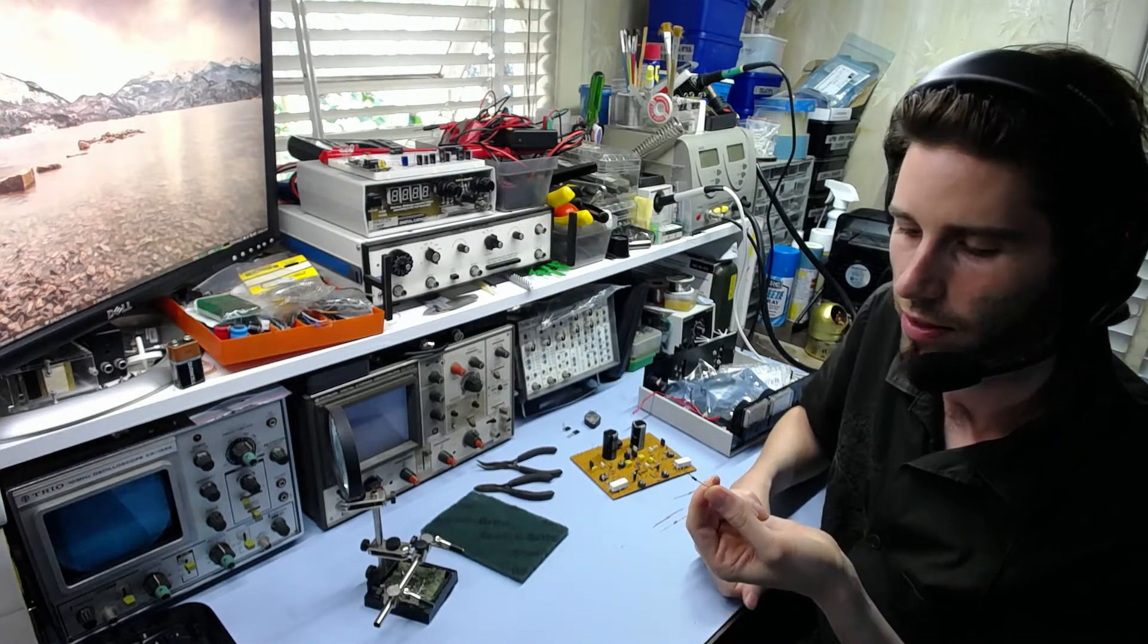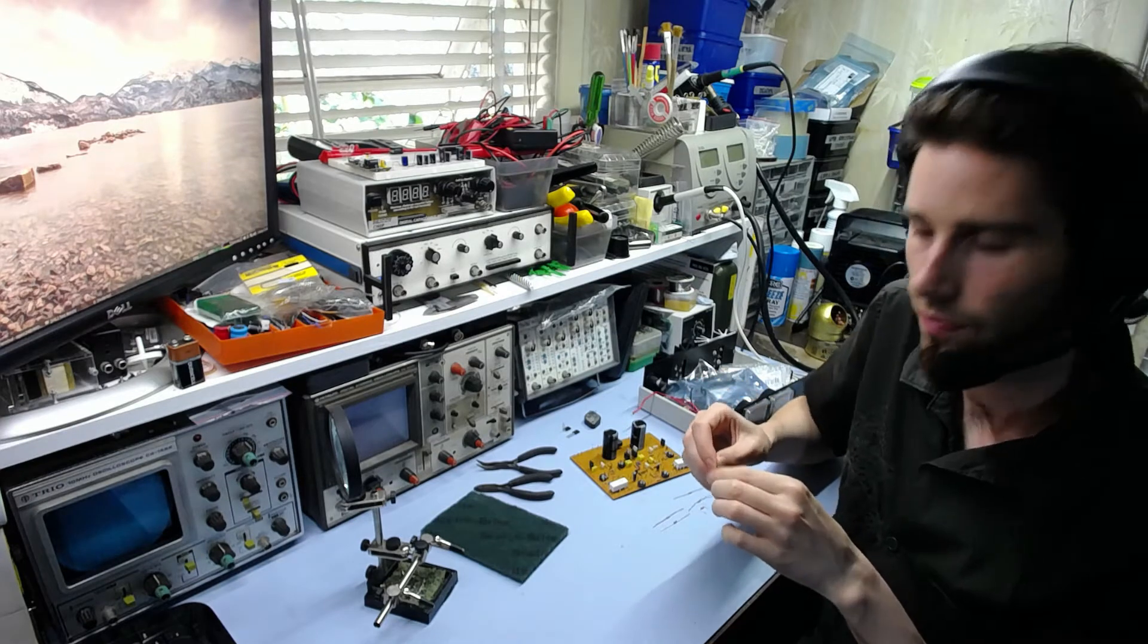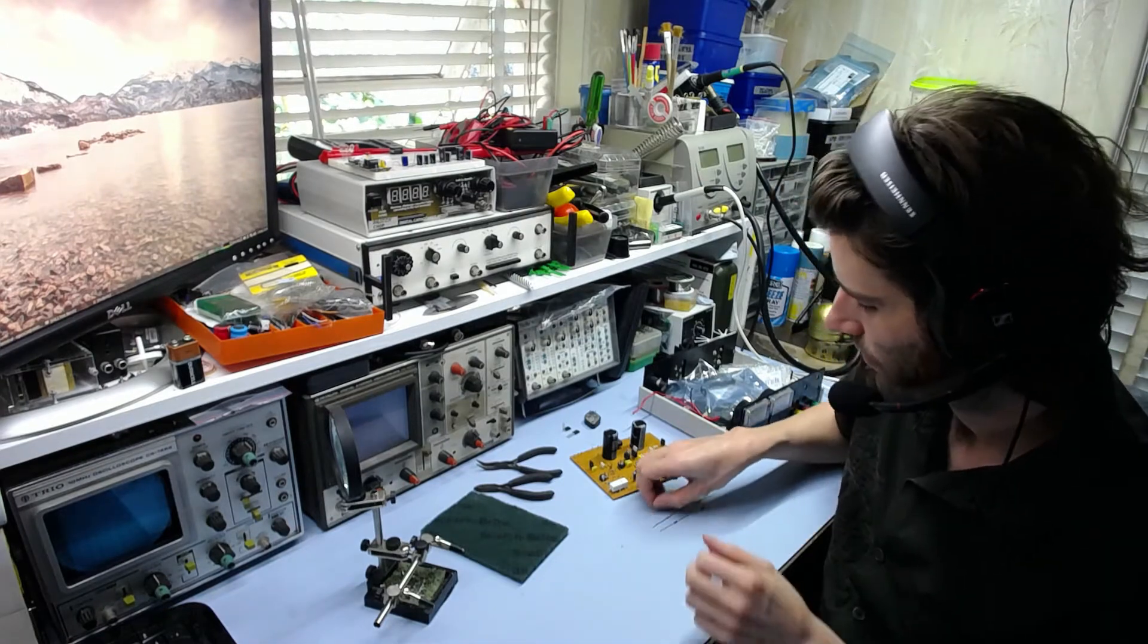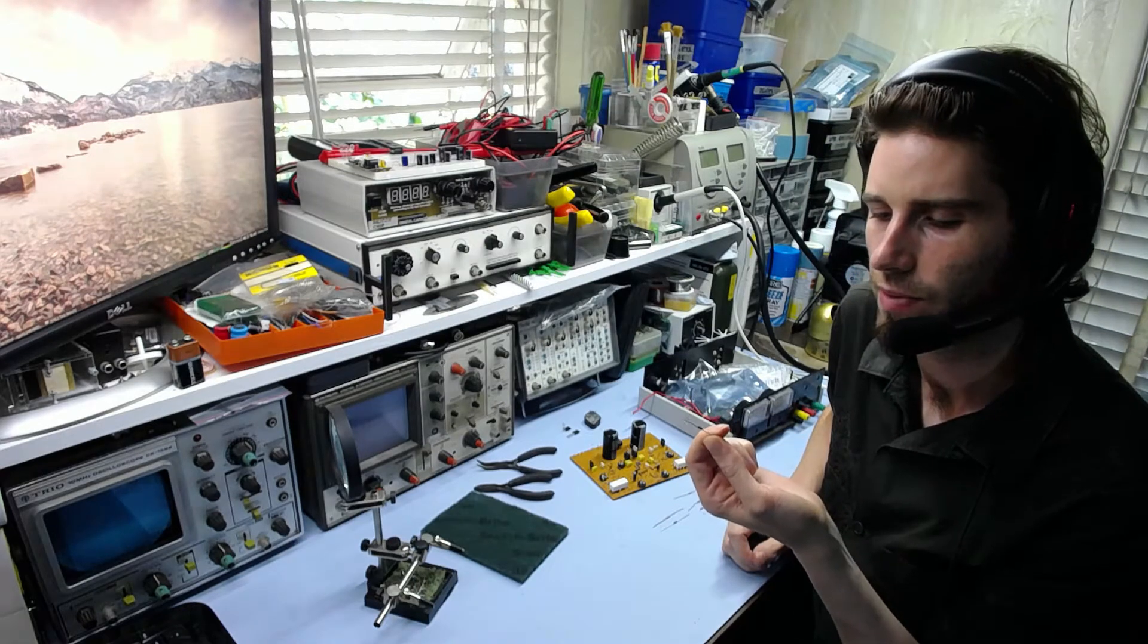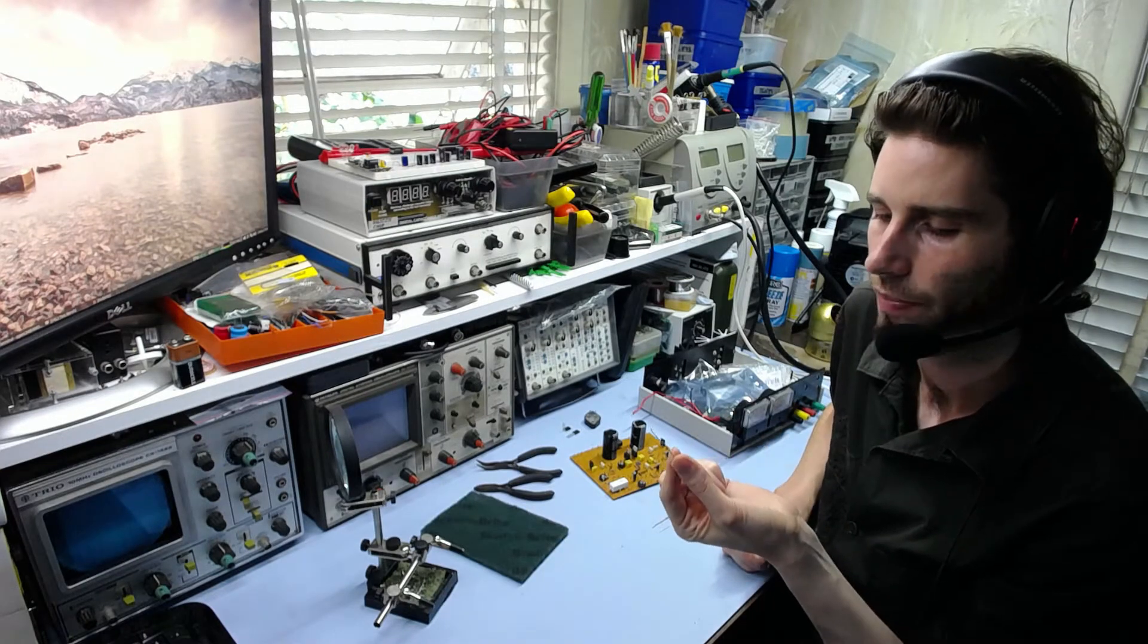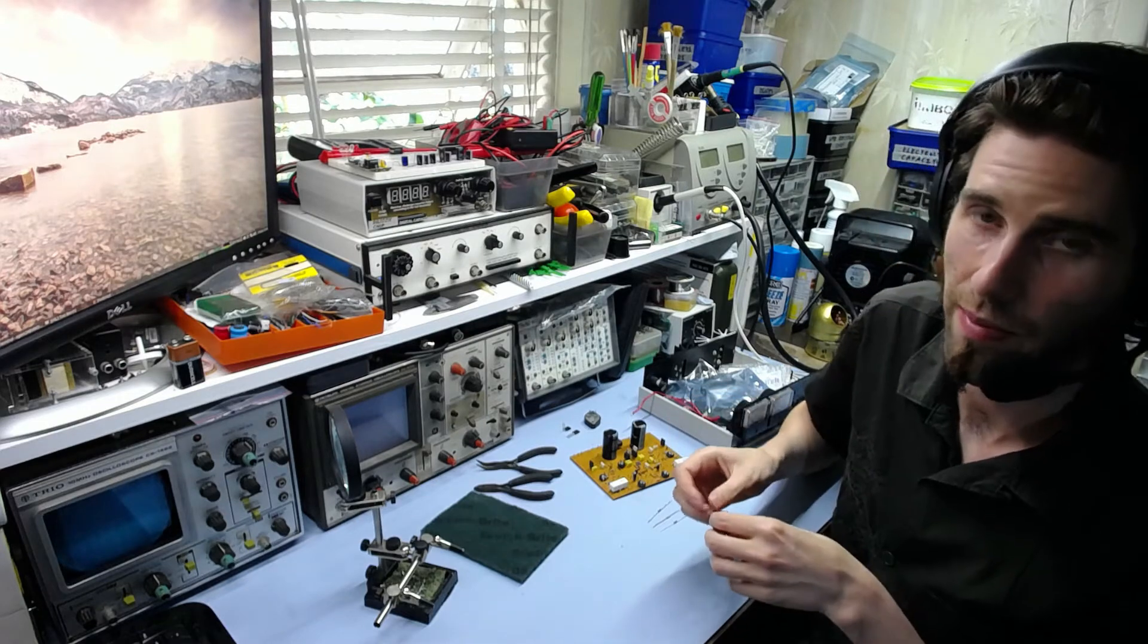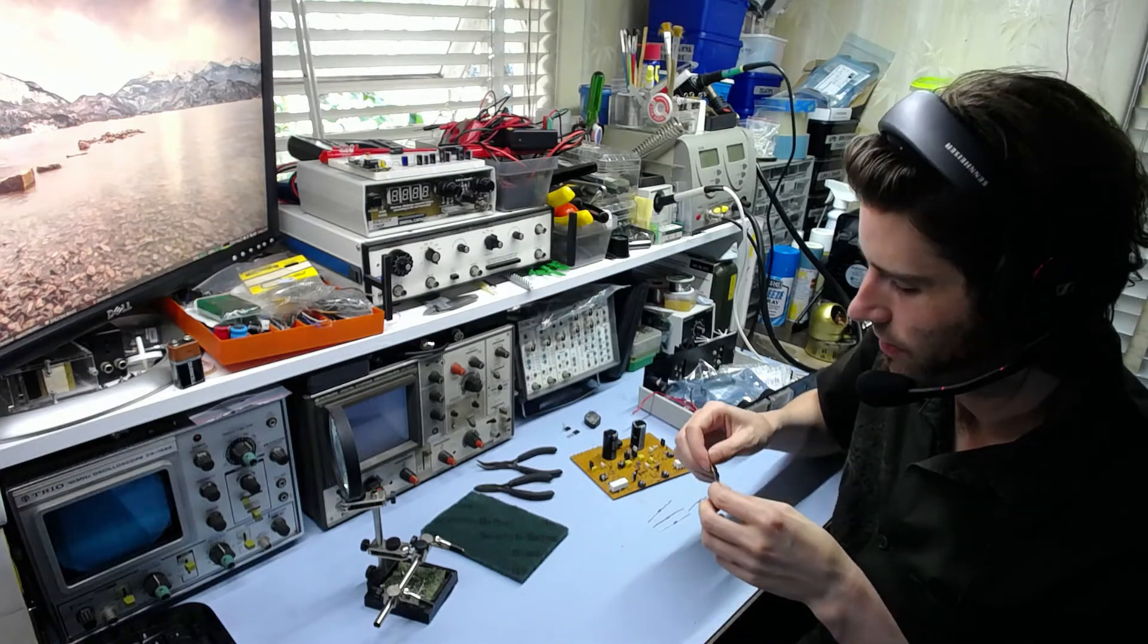This method here only works well for just tarnished leads though. If they're pitted and worse then you kind of do have to use sandpaper, and then you can re-tin them because these component leads are basically made of copper and then they're just tin coated. And when they oxidize, when the tin oxidizes to a certain extent, you just have to, well I found that sandpaper will take it off and you can start again basically.